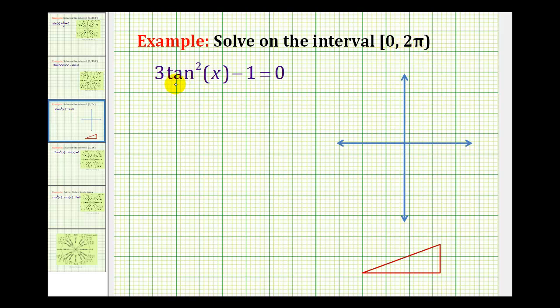For this equation, we only have one trig function, so let's isolate tangent squared x. We'll add 1 to both sides of the equation. This will be zero.